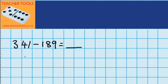First of all, let's just think about how both of these numbers are made up. 341 is made up of 300 plus 40 plus 1, and 189 is made up of 100 plus 80 plus 9.